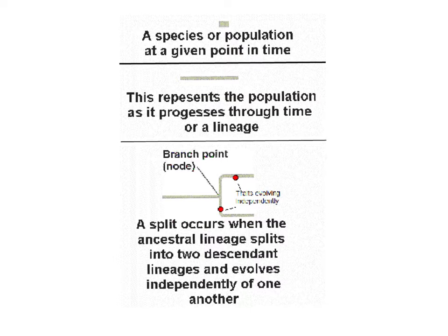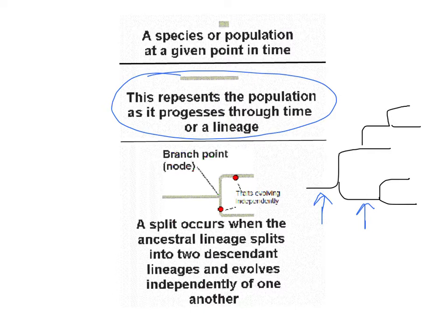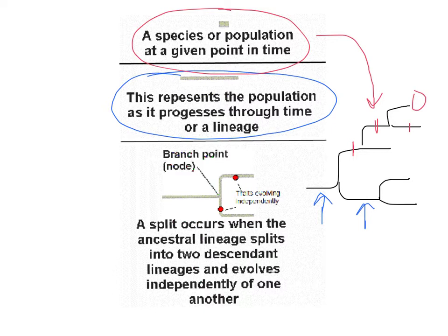When drawing a cladogram or phylogenetic tree, the long straight lines represent a population going through time, and the marks at the ends represent species at any given point. The branch points — or nodes — are where divergence between two groups along the ancestral line has occurred.